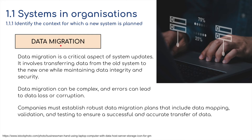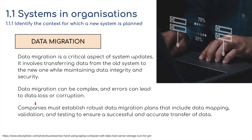Data migration is a critical aspect of system updates. It involves transferring data from the old system to the new one while maintaining data integrity and security — we don't want information lost or reaching hackers. Data migration can be complex, and errors can lead to data loss or corruption. Companies must establish robust data migration plans that include data mapping, validation — checking that data sent from one machine matches what's received by the new machine — and testing to ensure a successful, accurate transfer.